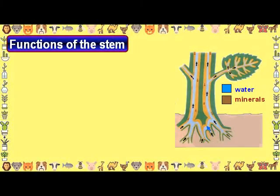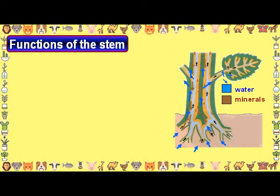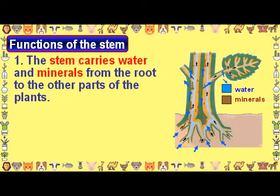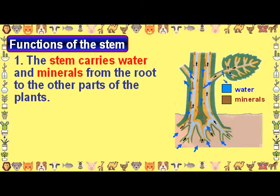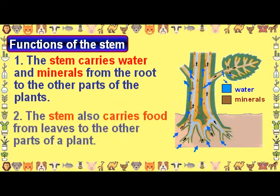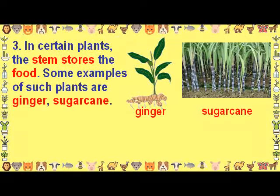Functions of the stem: The stem carries water and minerals from the root to the other parts of the plant. The stem also carries food from leaves to the other parts of the plant. In certain plants, the stem stores food. Some examples of such plants are ginger and sugar cane.